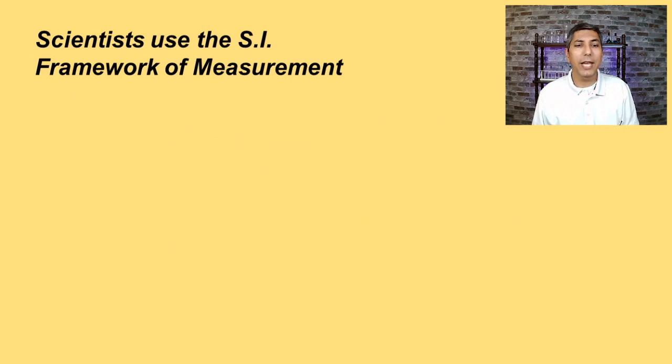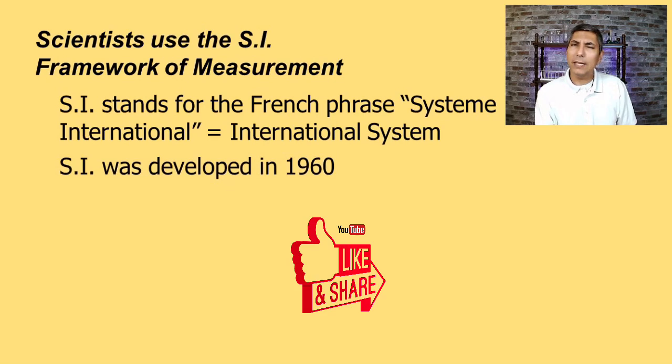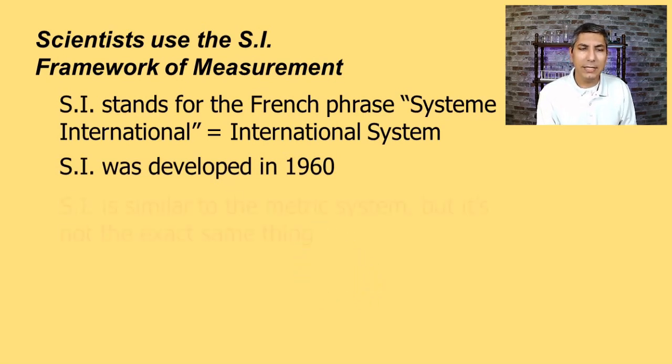Perhaps you've heard of the hand. We sometimes use that even today to measure the height of horses. It's about four inches. But if you measure the height of something with a hand, it's different depending upon the person's hand that you're talking about. Now, scientists use the SI framework of measurement. When we say SI, that stands for Systeme Internationale, or in French, that means International System in English.